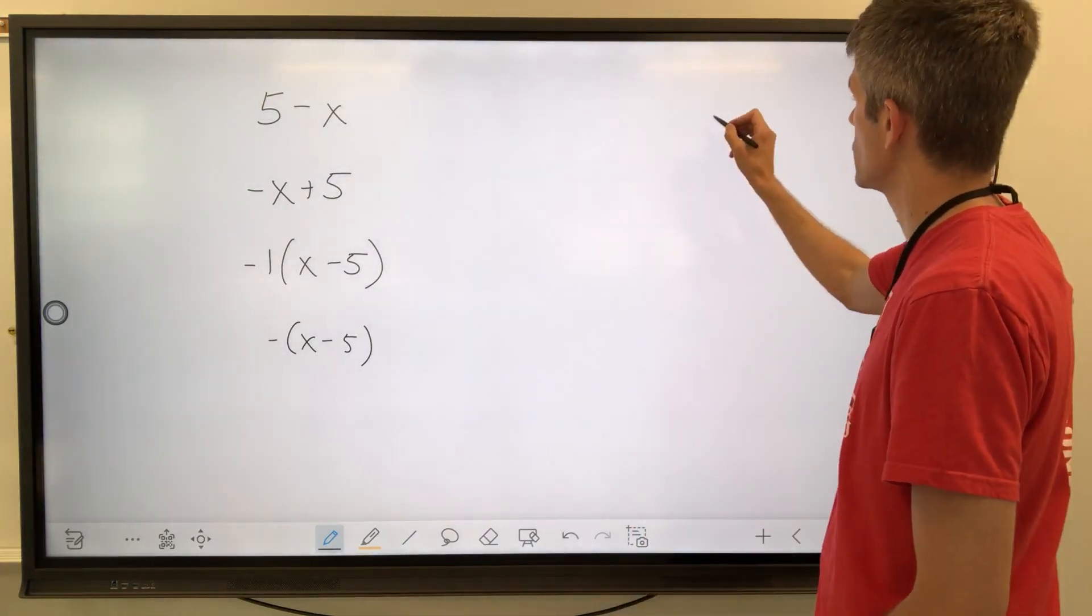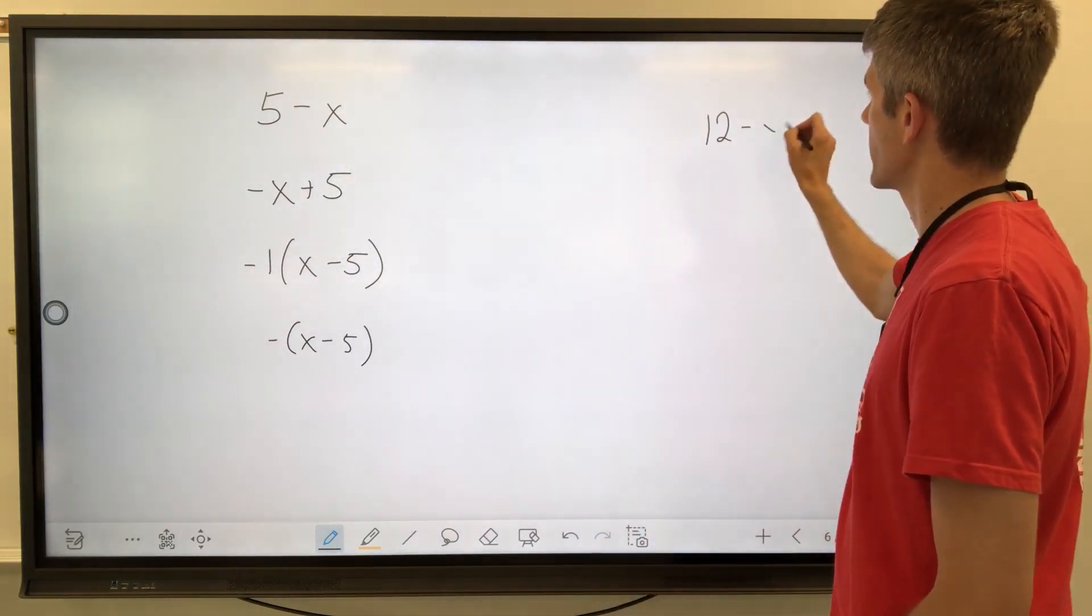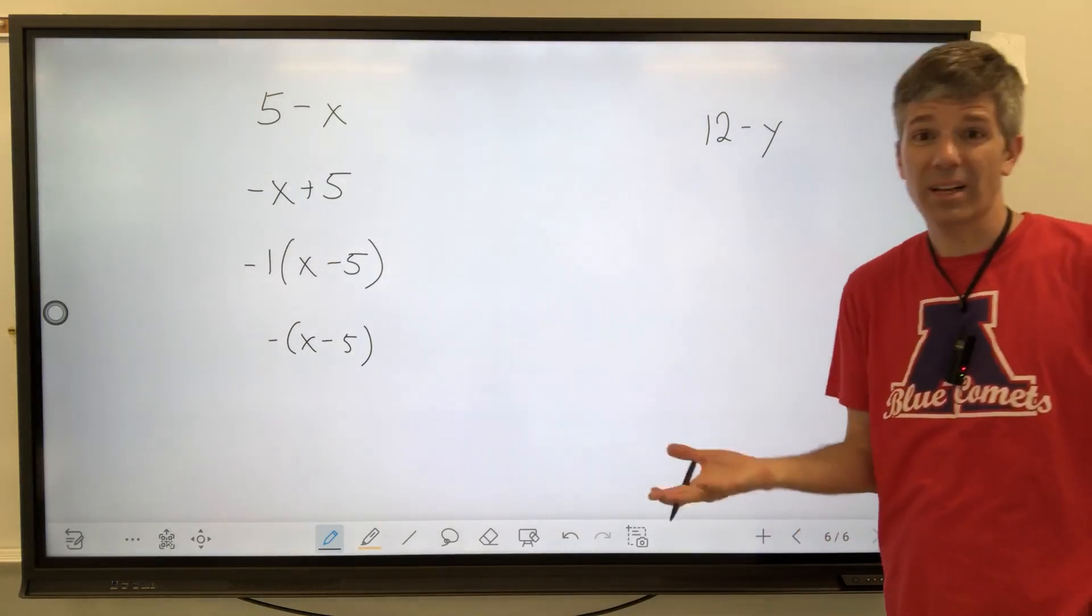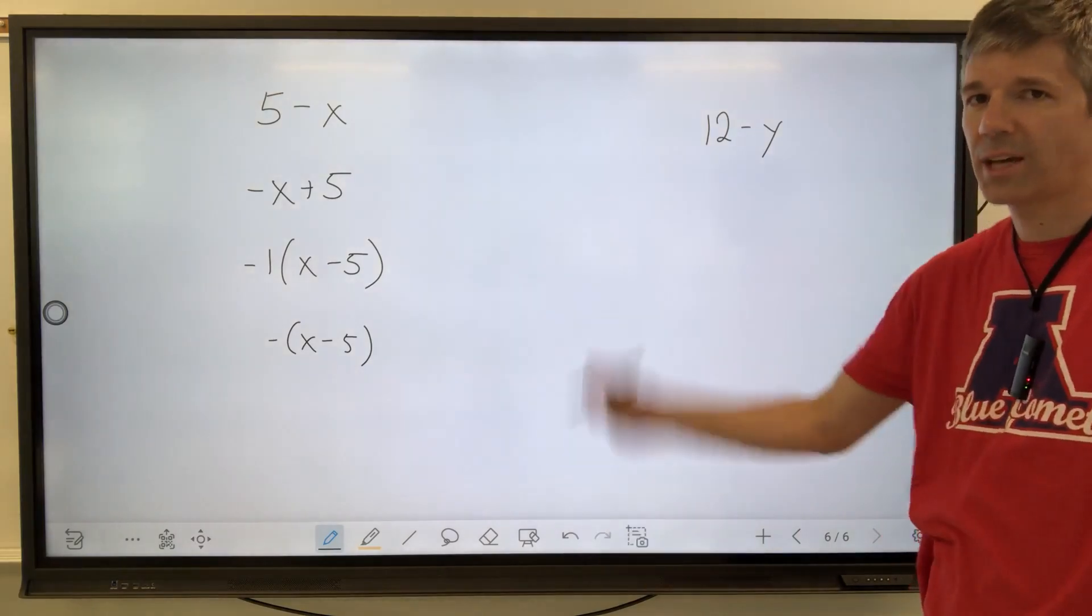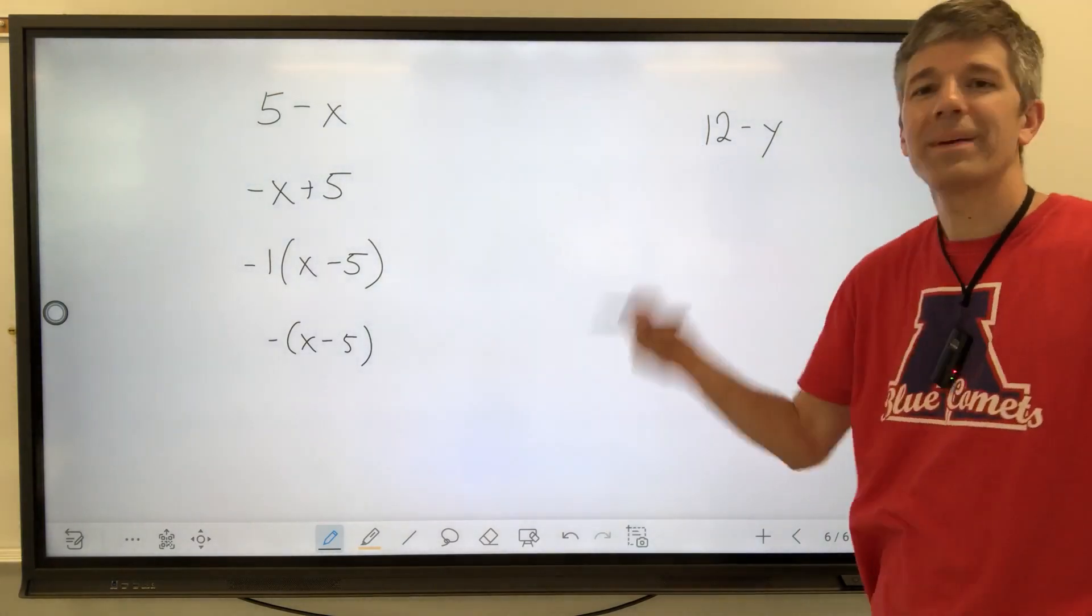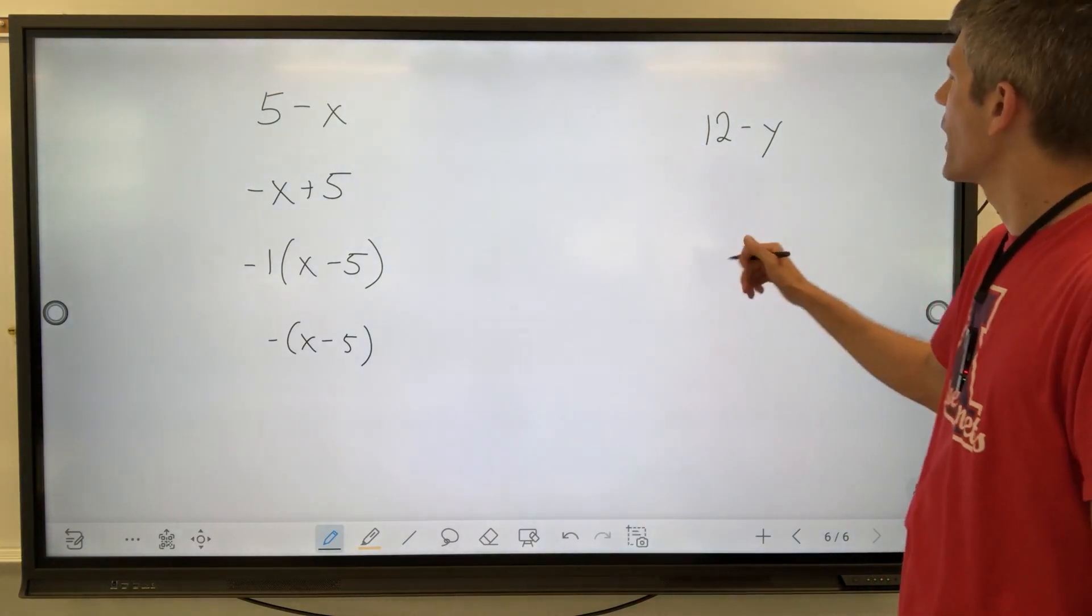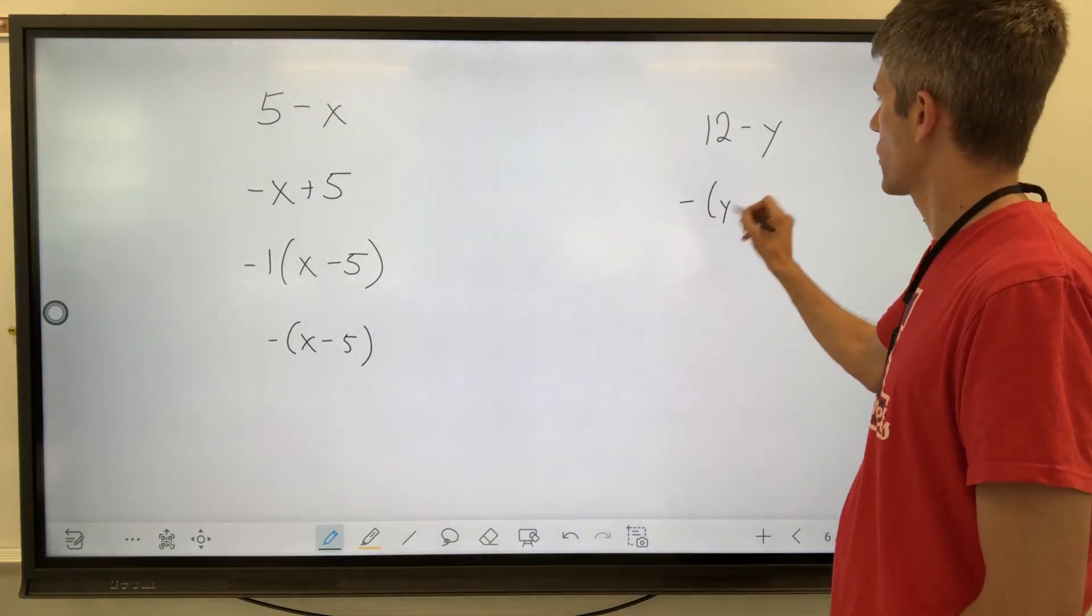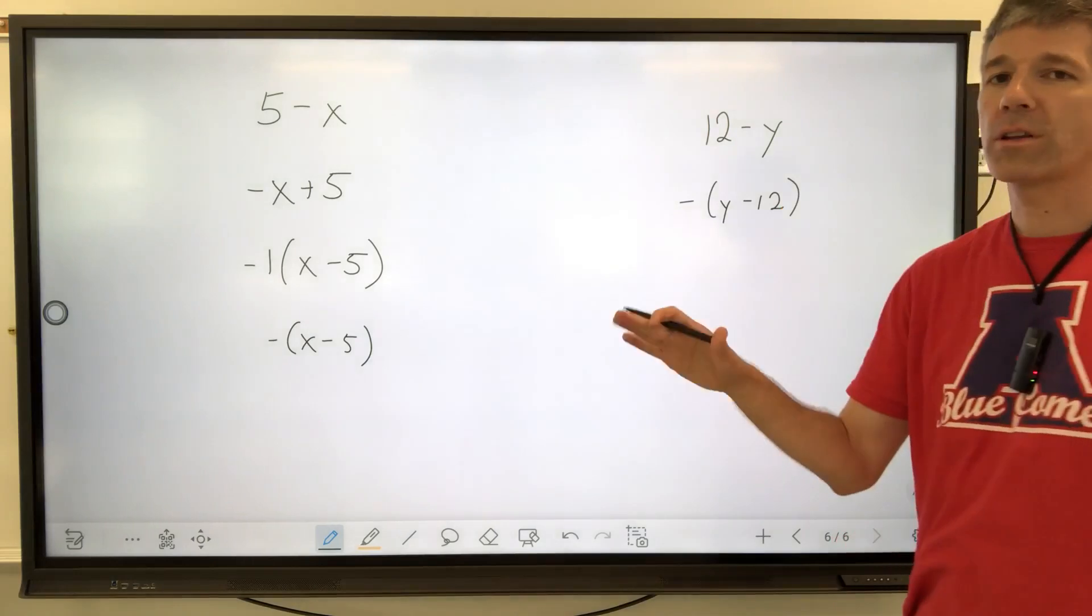If somebody just handed you 12 minus y, and they said factor that, you'd be like, it doesn't factor. It doesn't, but it does, because using all those same steps, super fast. It'd be neat if I could click my fingers and it just showed up. But using that, super fast, negative, and then y minus 12. Totally fine, same thing.